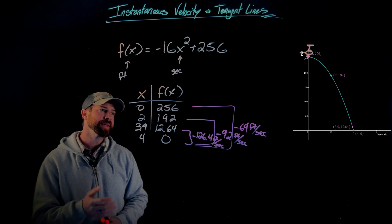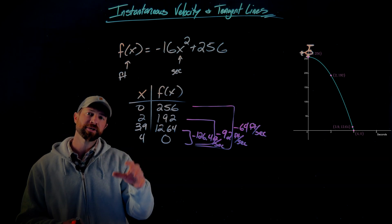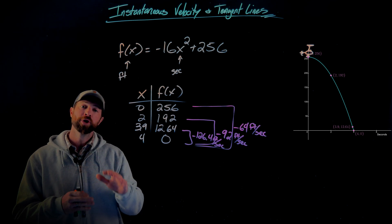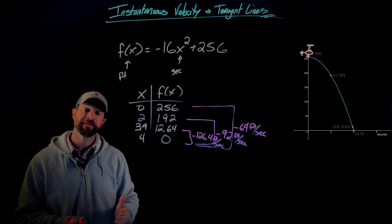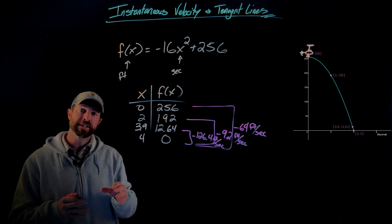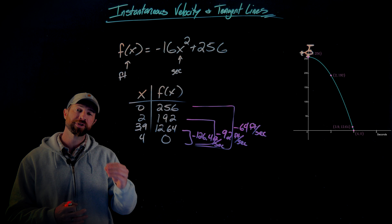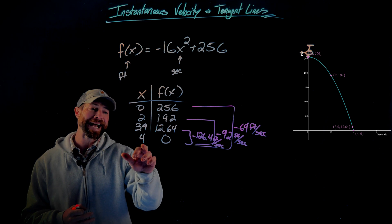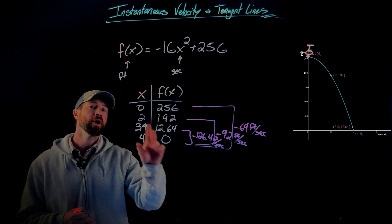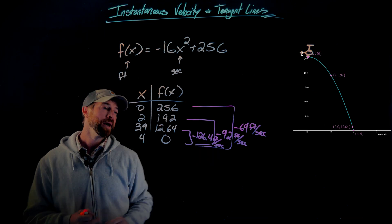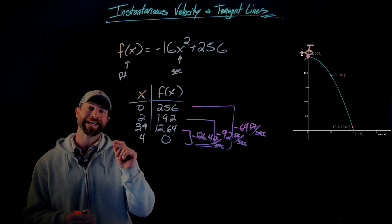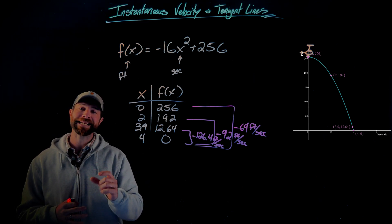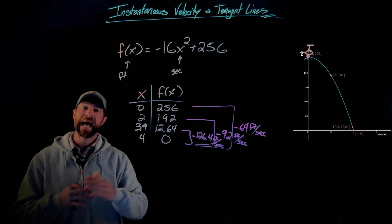The important thing about this work is that the closer our interval is to a specific time — in this case, we care about the speed of the helicopter when it hits the ground, knowing it can't withstand a speed more than 100 feet per second — the more accurately we understand the actual speed happening at four seconds. We still haven't exactly calculated the exact speed when it hits the ground; we have a pretty good estimate of negative 126.4, but we haven't found that exact speed. In this video, we're going to show a numerical technique for finding the instantaneous speed of this helicopter at any time.